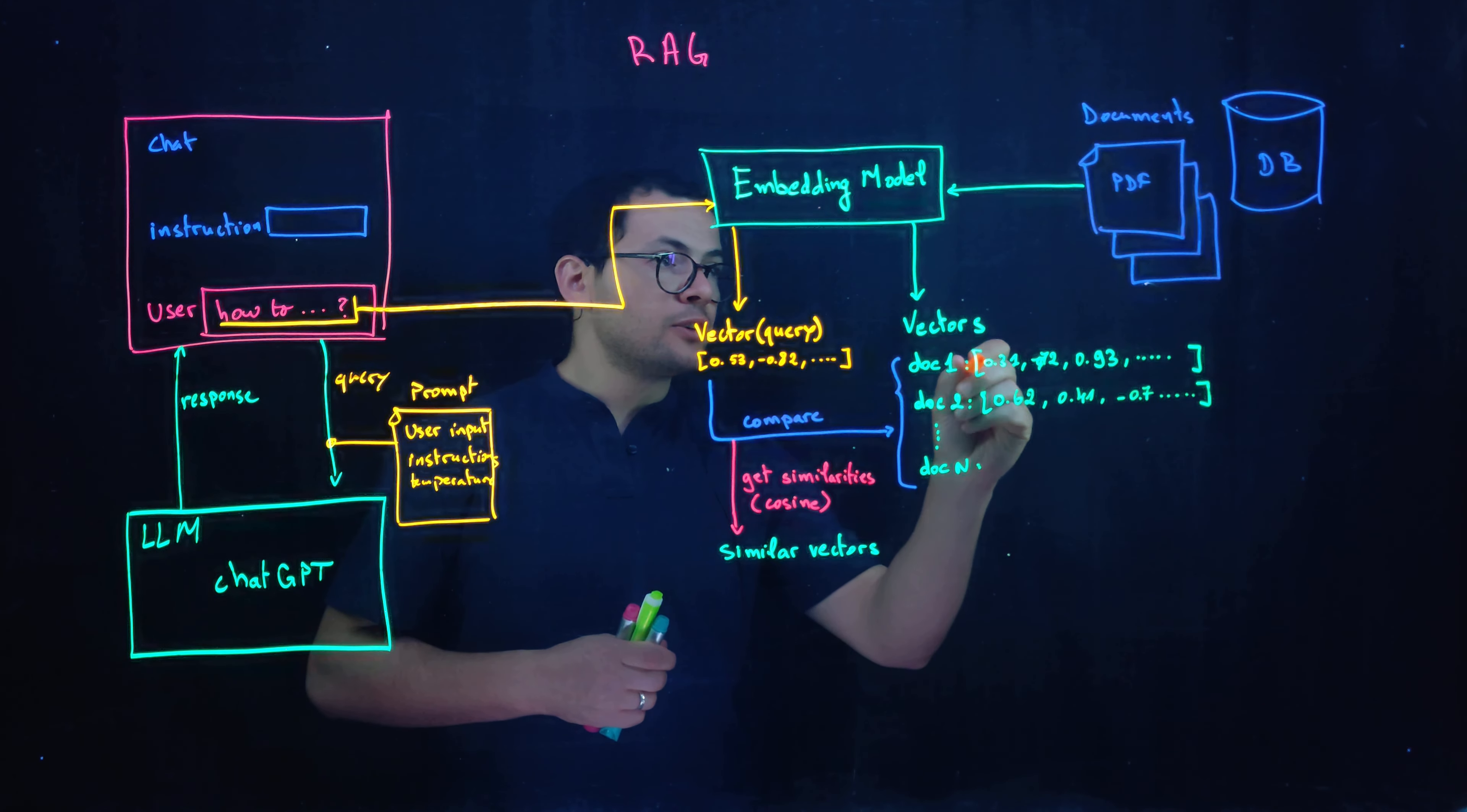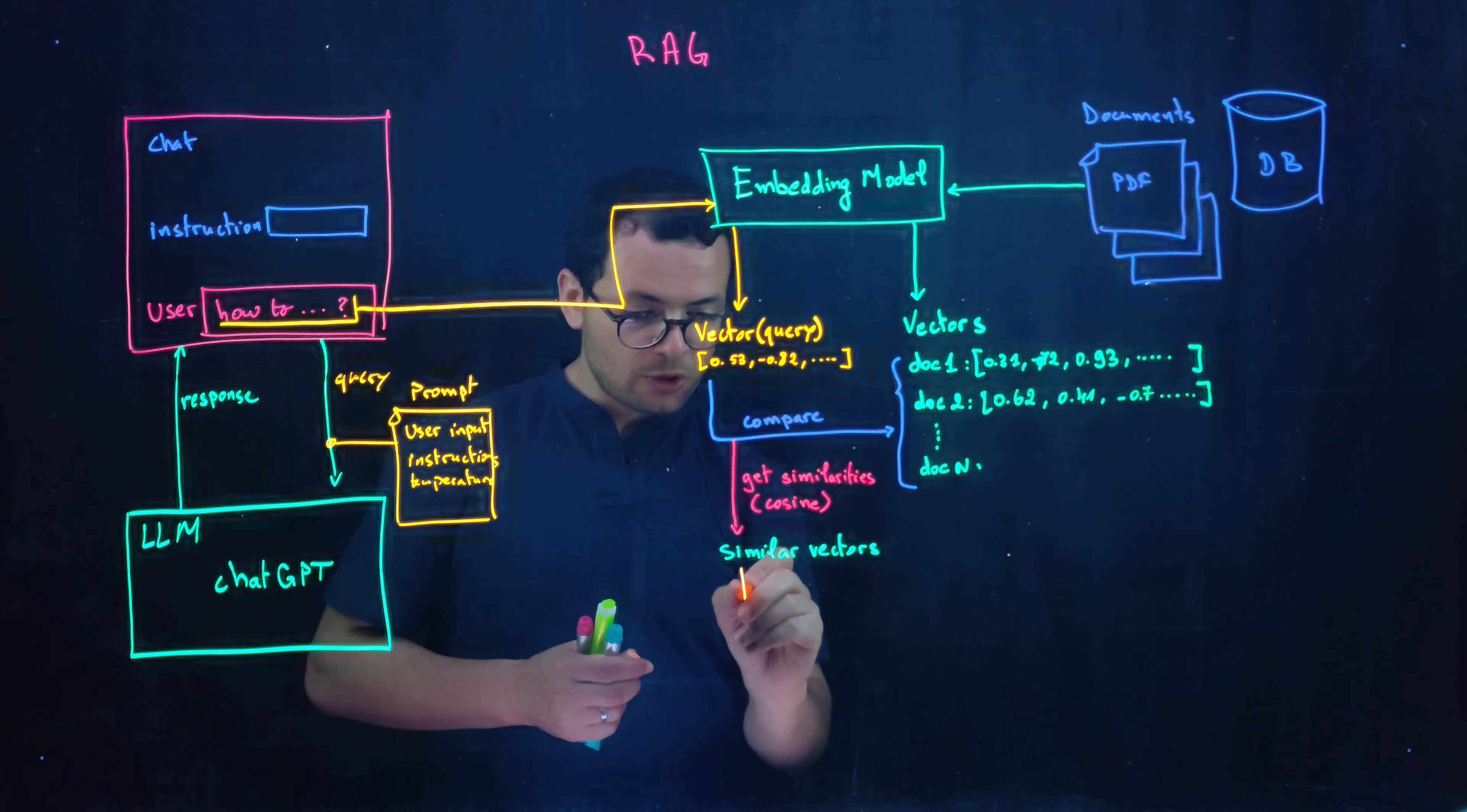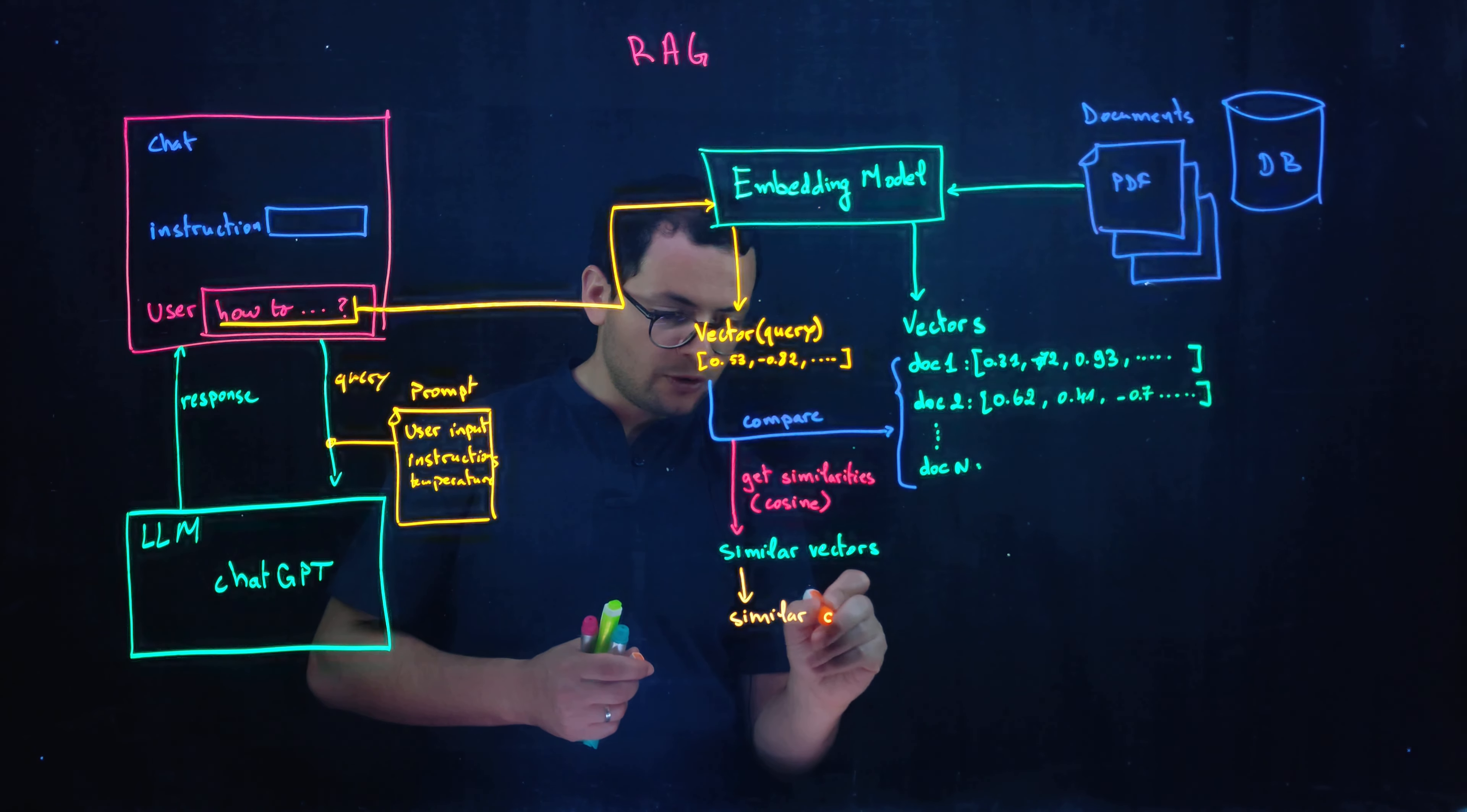And then because each vector is represented by a document, so that will allow us to search also within the documents. And here we'll get at the end the similar documents.